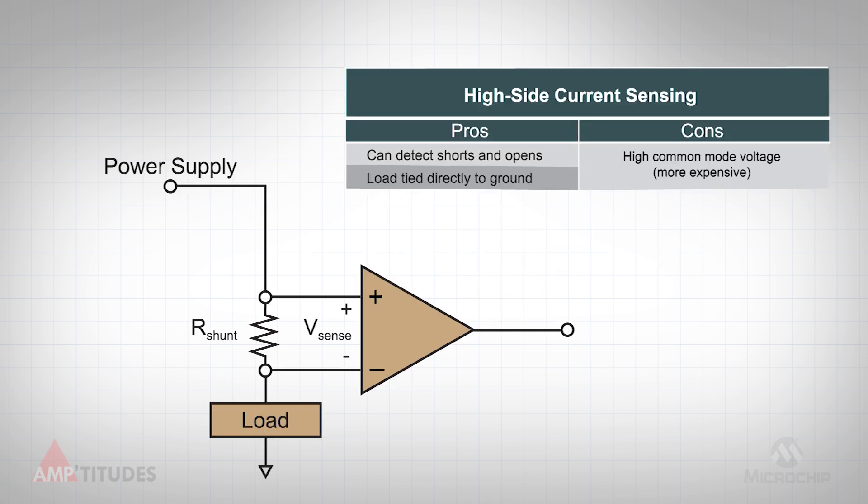Both of these approaches have their pros and cons. High-side current sensing has the benefit of being able to detect current-related faults, such as a short circuit or an open circuit, that could affect the load. Also, with high-side current sensing, the load can be referenced directly to ground, as we'll explore later.